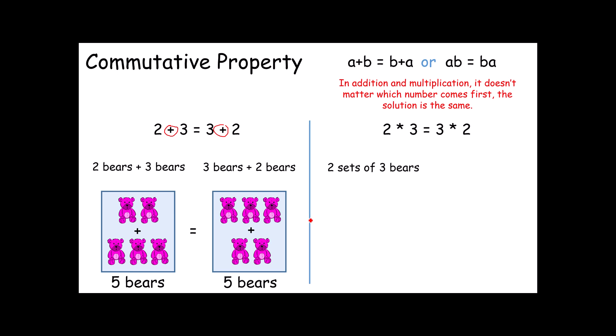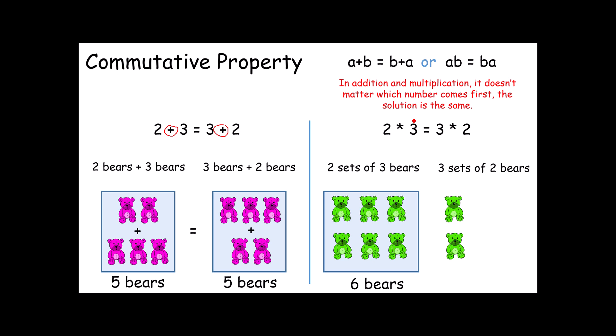In multiplication, we would look at it this way. If I have 2 sets of 3 bears, because that's what multiplication is, there's 3 bears, and there's 3 bears. I end up with a group of 6 bears. If I have 3 sets of 2 bears, there's a set of 2, a set of 2, and a set of 2. All together, that makes 6 bears. It really doesn't matter which number I put first. 3 groups of 2 and 2 groups of 3 are the exact same thing.